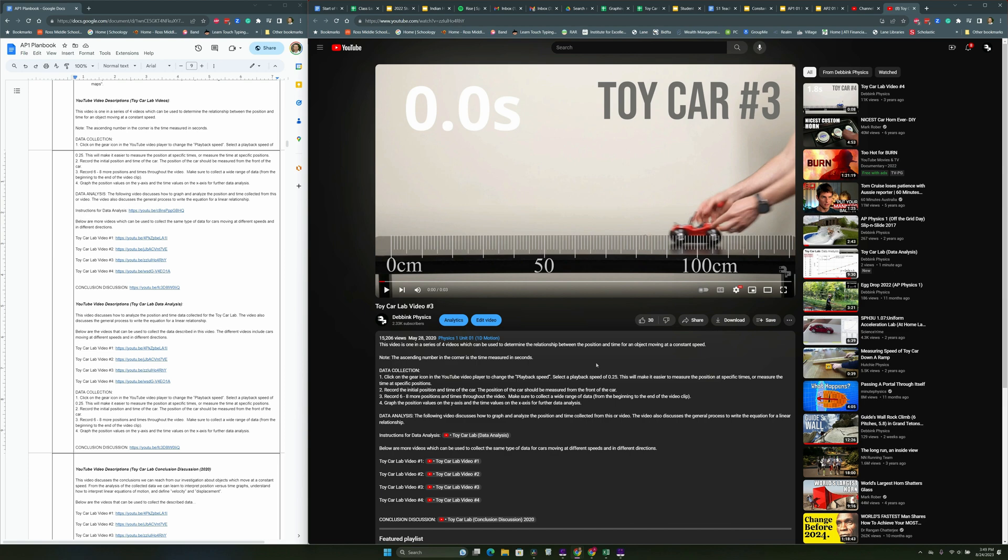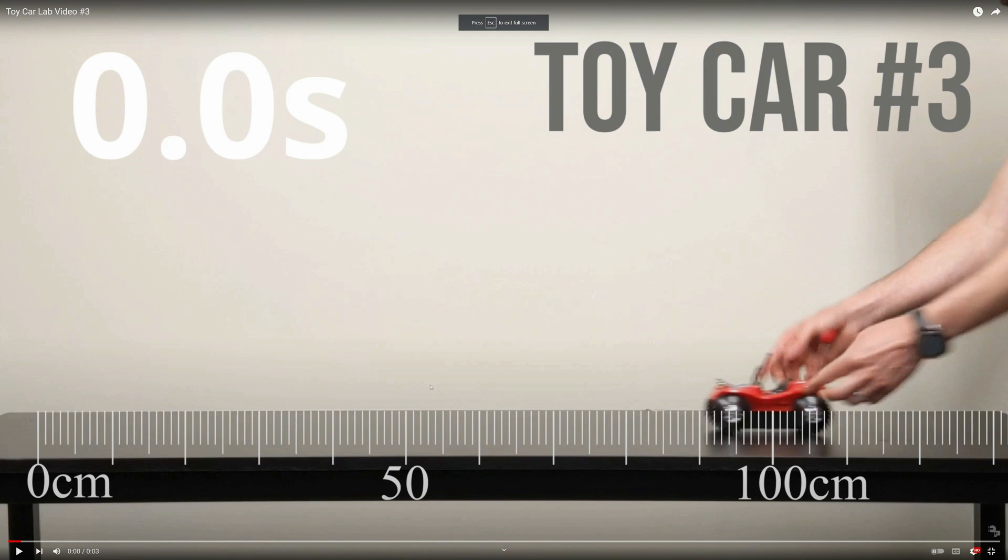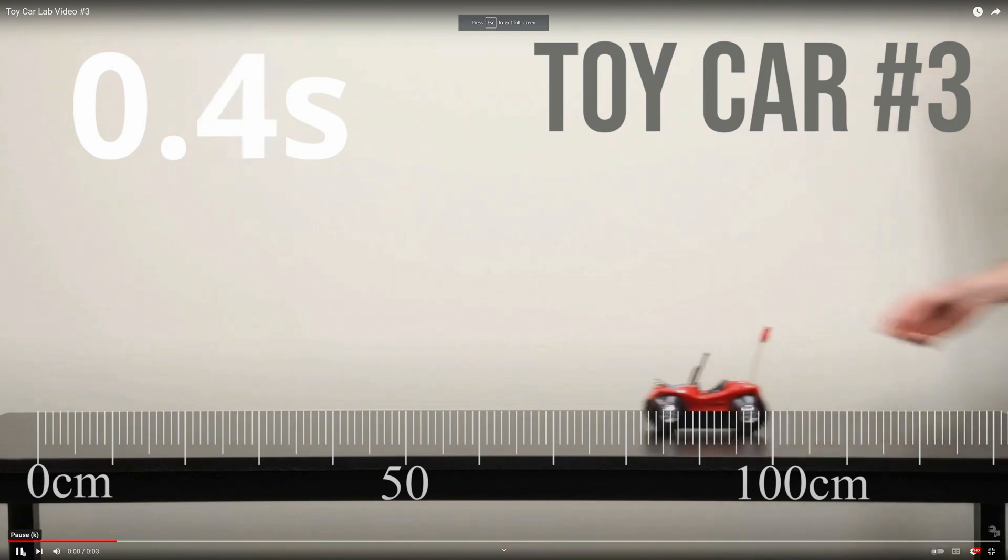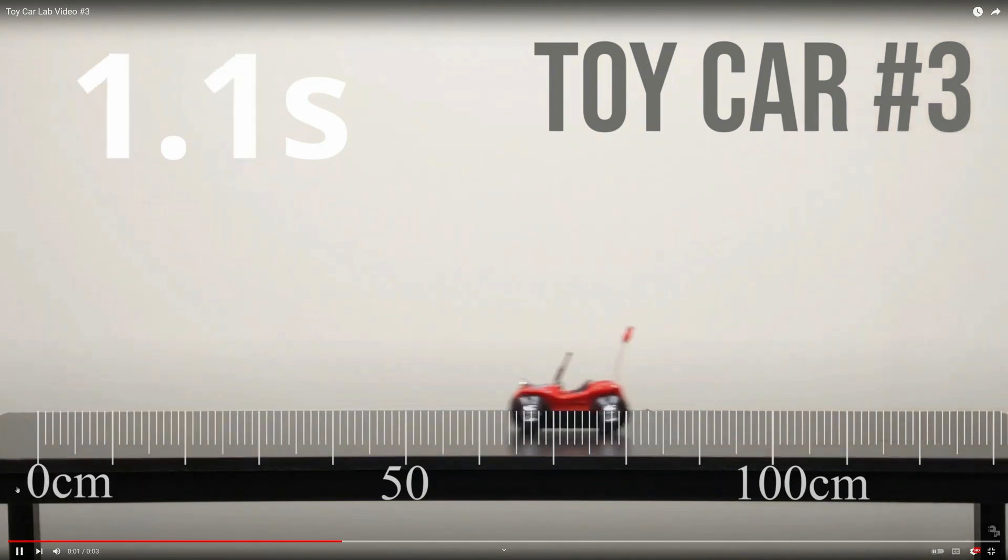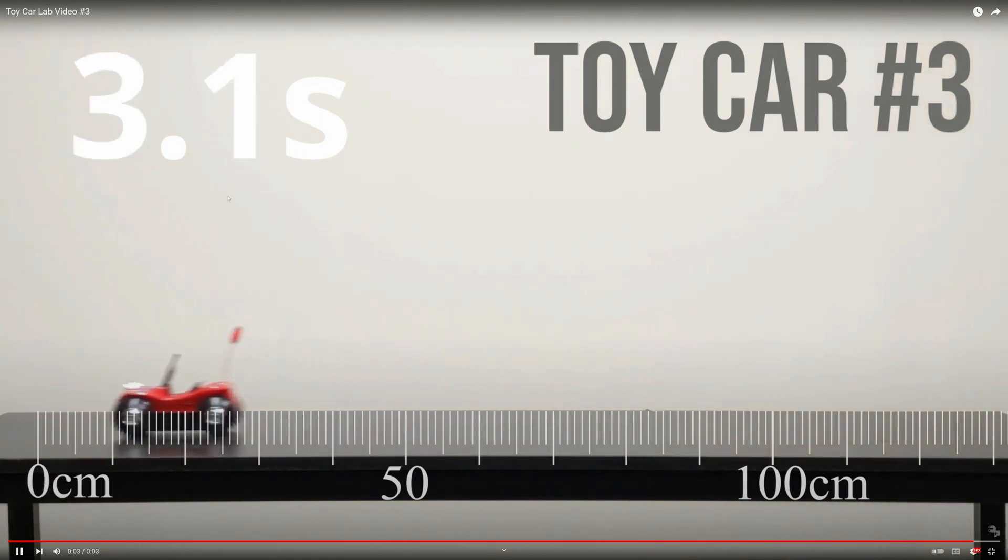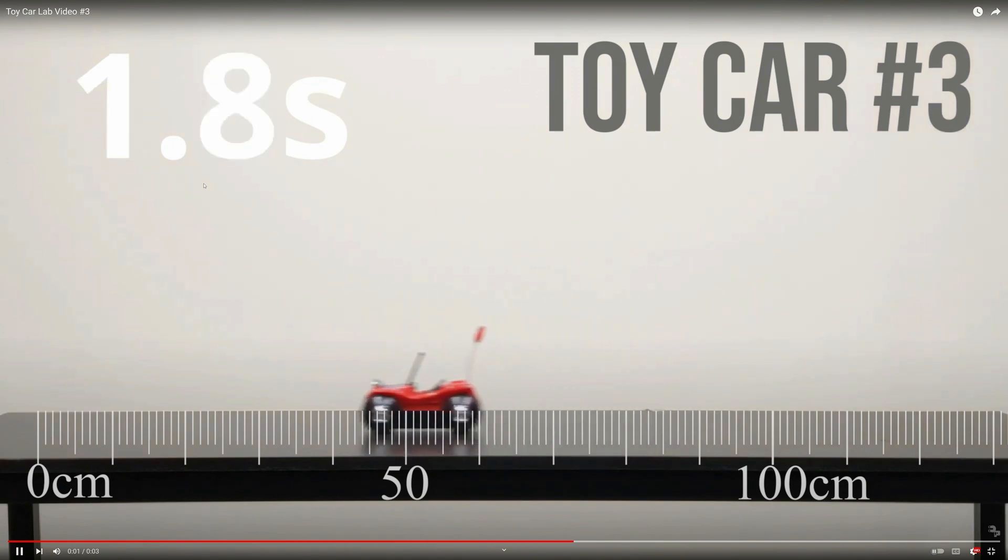In order to collect that position and time data, you're going to click on one of the links in the video description below, which is a video of one of those toy cars moving at a particular speed in a particular direction. I'm just going to use the video linked titled Toy Car Lab video number three. So let me expand this a little bit. Let's just play this through and see what this is. It's just a red car moving from right to left towards a position of zero and it's got a little timer in the upper left-hand corner.